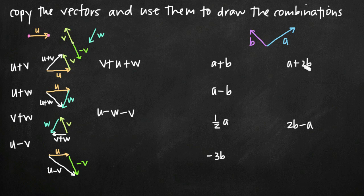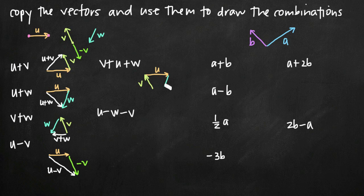For v plus u plus w, we start with v, then add positive u, then add positive w, each attached to the terminal point of the previous vector. Our result — v plus u plus w — is the vector from the very beginning point to the very ending point.